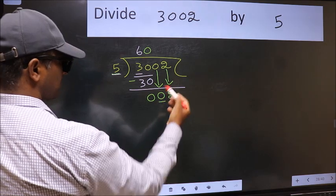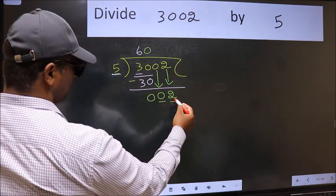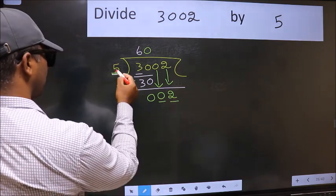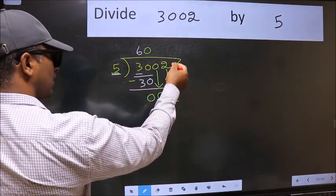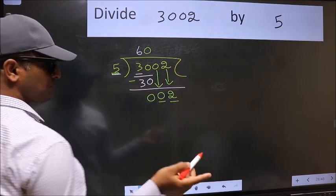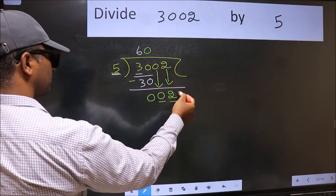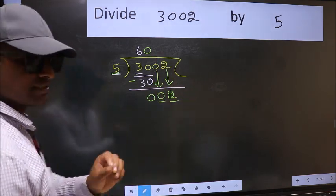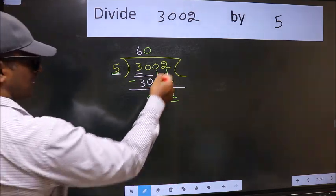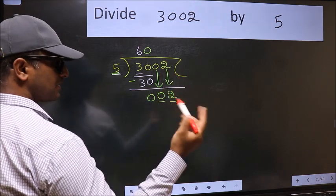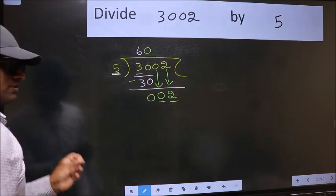After this step, the mistake happens. And the mistake is this: Here we have 2 and here 5. 2 is smaller than 5, and we don't have any more numbers to bring down. So what many do is they directly put dot, take 0, which is wrong. Why is it wrong? Because just now you brought this number down, and in the same step you want to put dot, take 0, which is wrong.